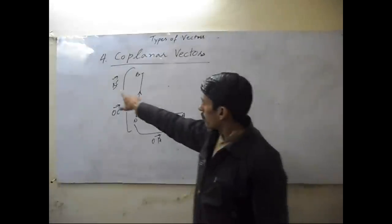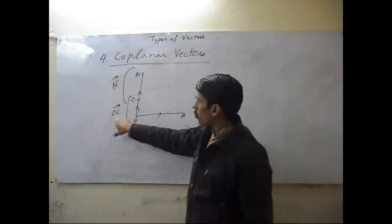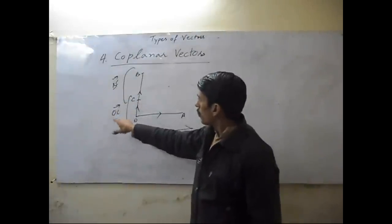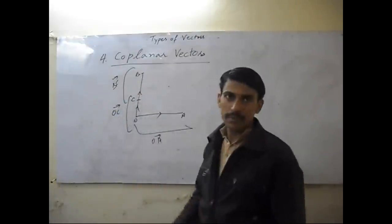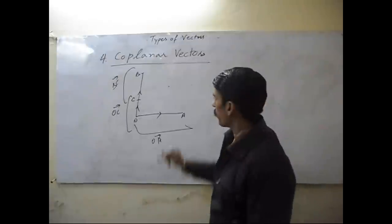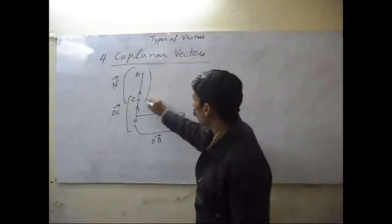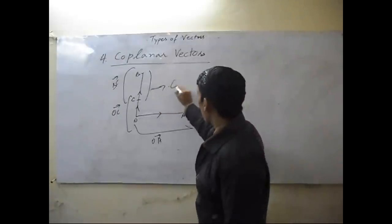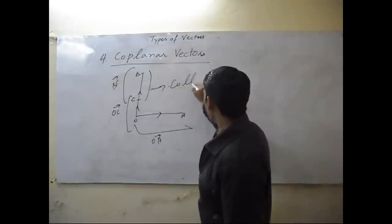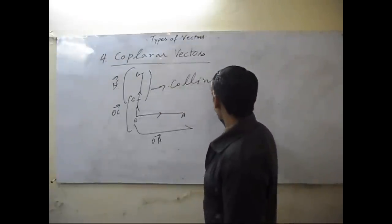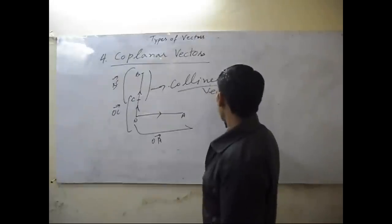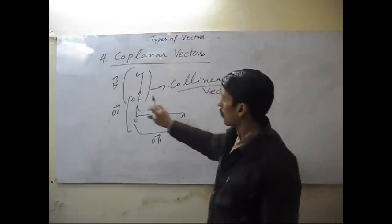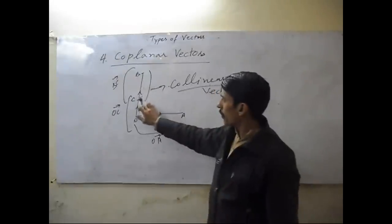BC and OC are also collinear vectors, because these are on the same line.